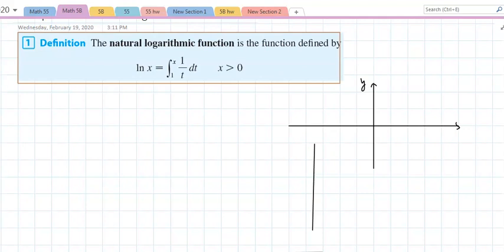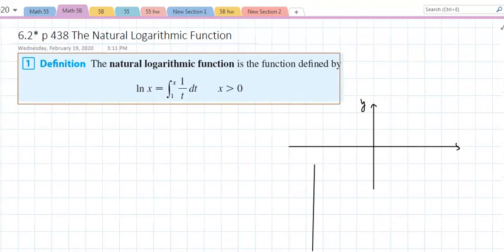Okay, we are in section 6.2 star. Again, if you're using the book, make sure you are in the star section on page 438 on 6.2. It's the bluish part of the book. So we start with the natural logarithmic function. What they do in this book, they separate. They do a natural logarithmic function that is a log with a base of e of x.